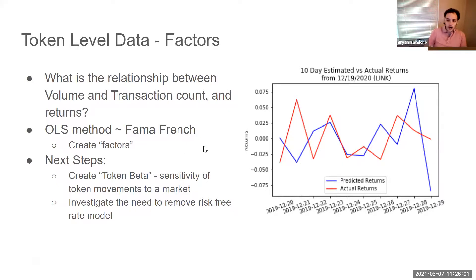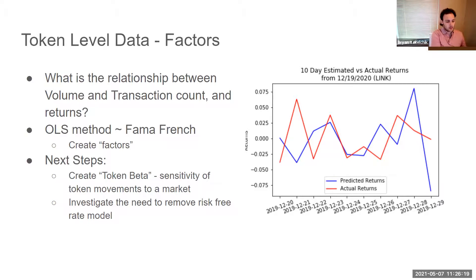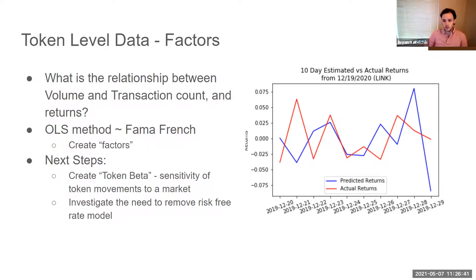The next steps for a model like this would be to develop a beta — what sensitivity does a specific token have to an index or market, which is self-defined by the user. In equities, for example, we look at how a specific stock moves relative to the S&P 500; in this case, how a specific token might move relative to an associated index. Additionally, an idea is to remove the risk-free return from our analysis, and establishing what risk-free really means in the context of the crypto space is another area to investigate.